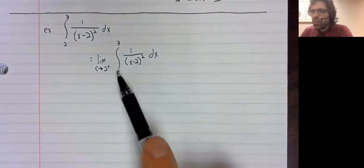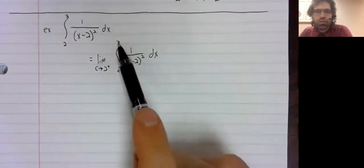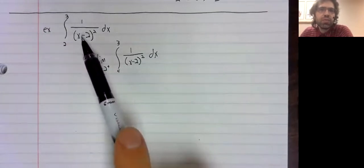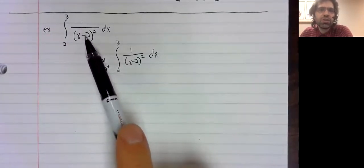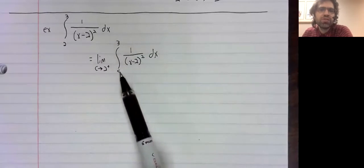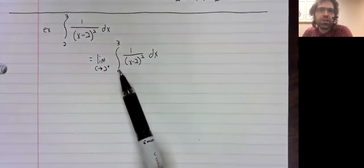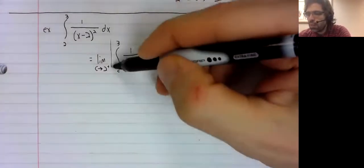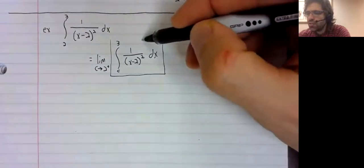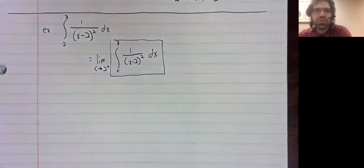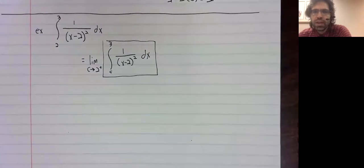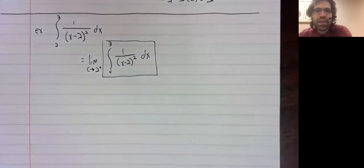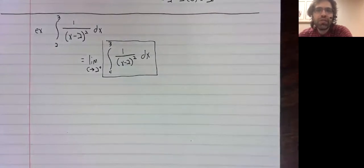Now between C and three, everything's continuous. The only discontinuity occurred at two, and C is bigger than two. So the fundamental theorem applies to this integral. And assuming that we can take this antiderivative, we can compute this definite integral.